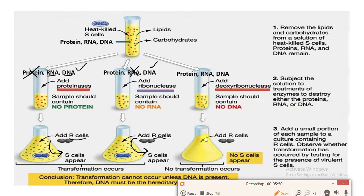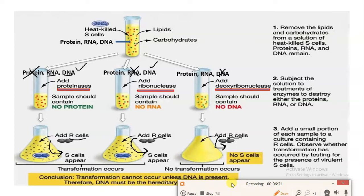But in the last experiment, where protein, RNA, and DNA were present in the test tube, deoxyribonuclease is added, which breaks down and degrades the DNA. Now only protein and RNA remain. The R-strain is not able to take up the genetic material from the surrounding because it does not take up protein or RNA. So the R-strain never converts into the S-strain, because in the transformation phenomenon, it is only DNA that the R-strain can take up, which causes all its properties to change and converts it into the virulent S-strain.